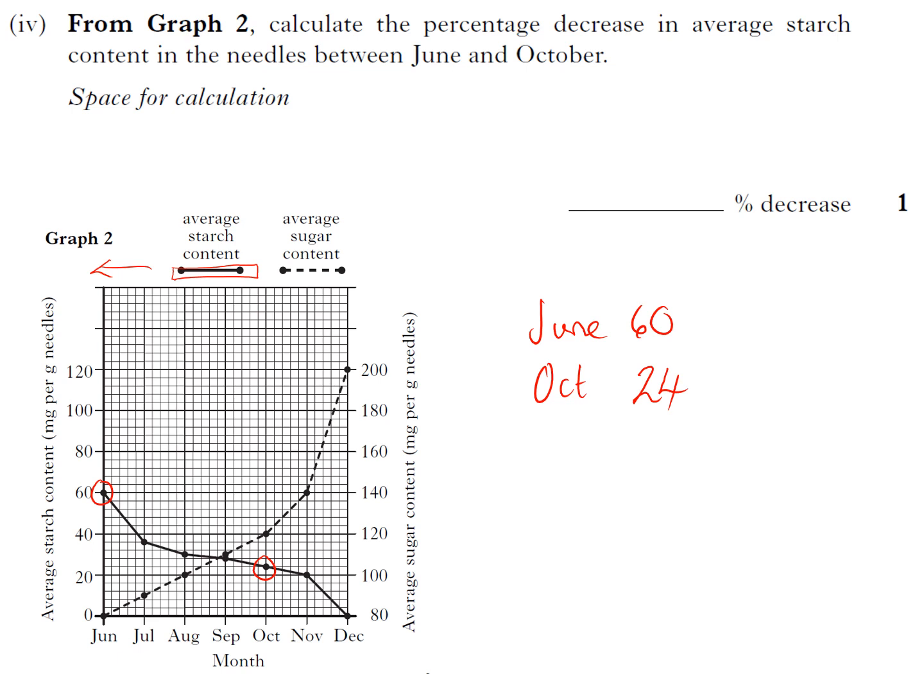Okay, percentage decrease—for any percentage change, whether it's up or down, your calculation is: percentage change is the change divided by the start, and then times the whole thing by 100. So my change here is my 24 to 60.